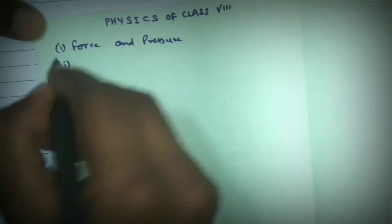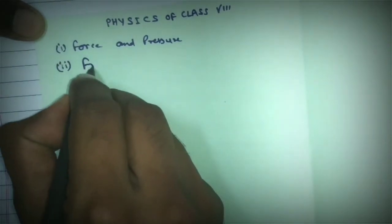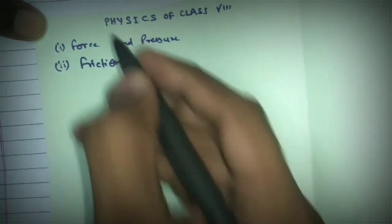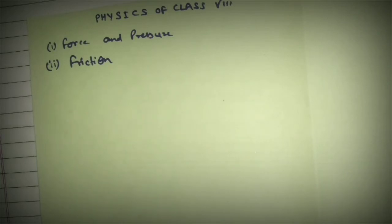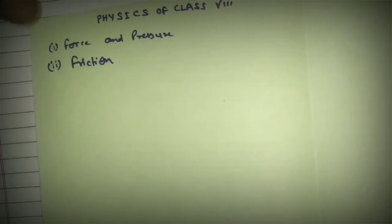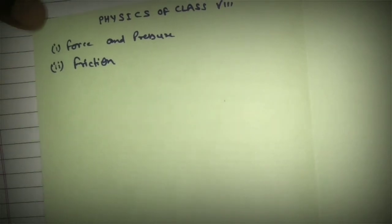Next in physics we study about friction. In this chapter we discuss what is the mechanism of friction, why friction is important, what are the advantages and disadvantages of friction, and how we increase or decrease the friction. Then we study about different types of friction such as static friction and kinetic friction.